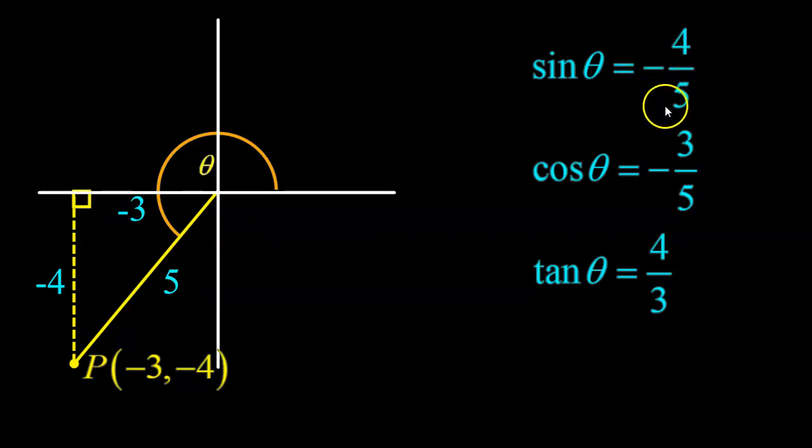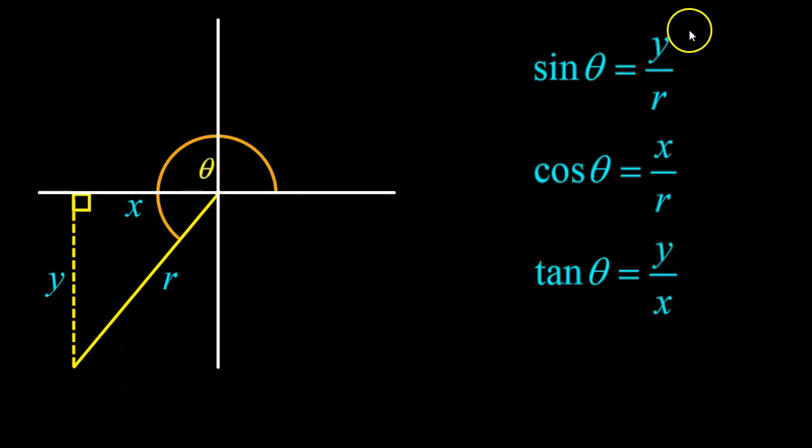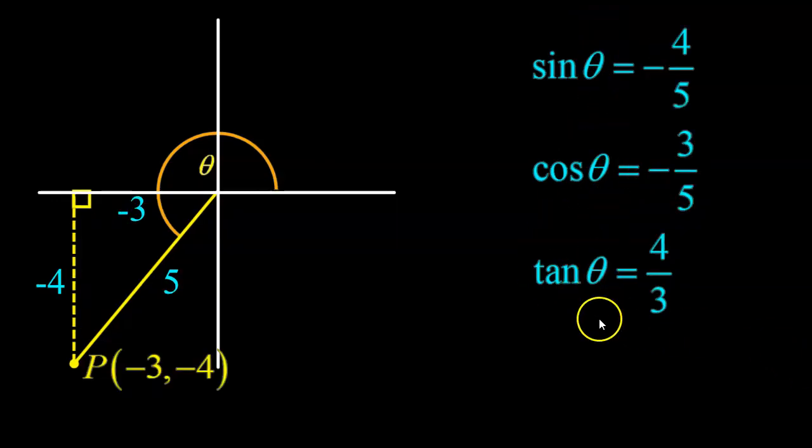So you can think about it that way. What I'm trying to show you here is that you should think about sine, cosine, and tan in terms of these expressions, y over r, x over r, and y over x. In addition to that, you can also think of it as the sine, cosine, tan of any angle is simply the opposite over hypotenuse, adjacent over hypotenuse, opposite over adjacent for the reference angle.